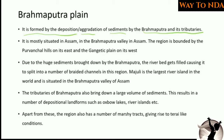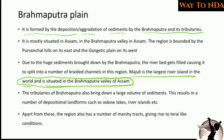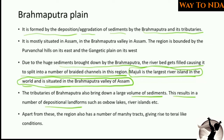Due to the deposition of sediments in the river stream, you will find the Majuli Island — the largest river island in the world — situated in the Brahmaputra Valley of Assam. Due to the huge sediments brought down by the Brahmaputra, the river bed gets filled, causing it to split into a number of braided channels. The tributaries of Brahmaputra also bring large volumes of sediments, resulting in depositional landforms such as oxbow lakes and river islands.